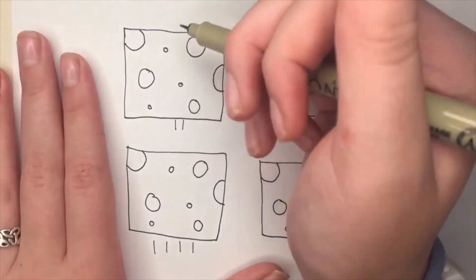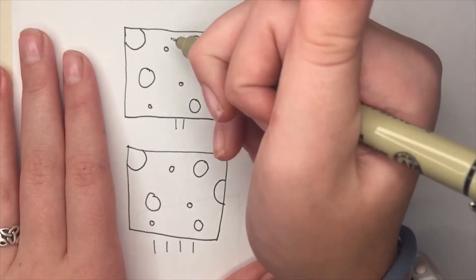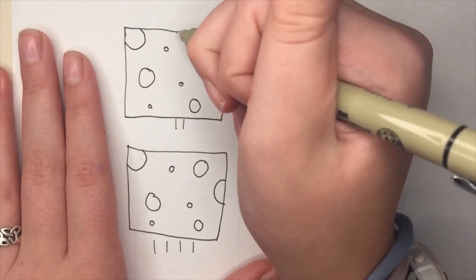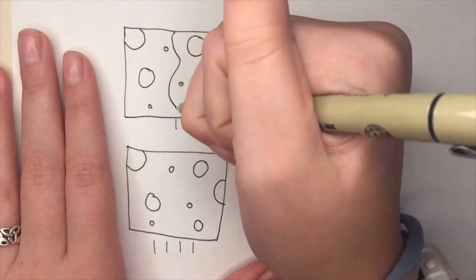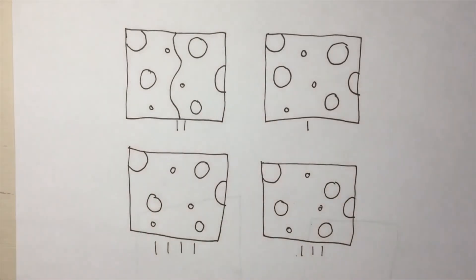The second step is to make a squiggly line intertwining in the circles. Like this. I'll come back when I have that squiggly line in each of my boxes.